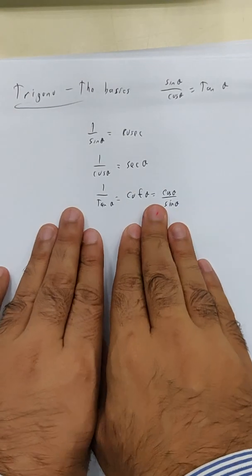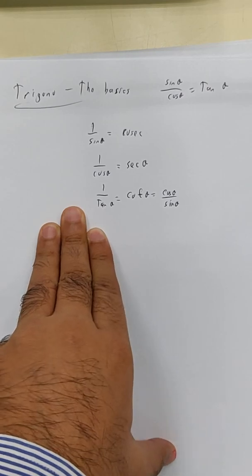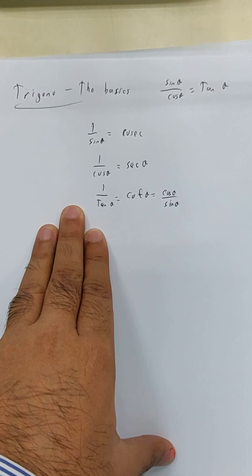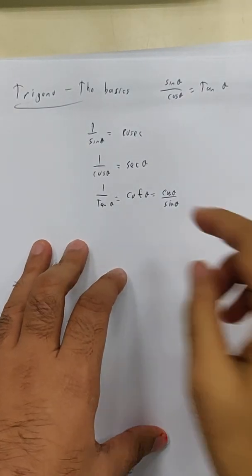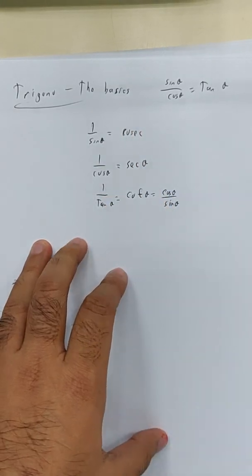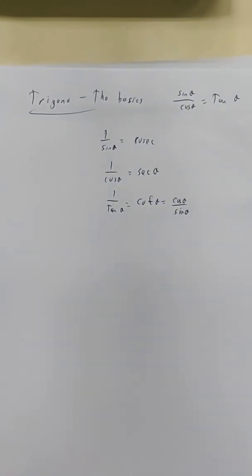Alright, just show of hands. Do you know how to memorize this thing? Please raise your hand. Do you know how to memorize one over sine is cosec, one over cos is sec, one over tan is cot? Not many people in here. There is actually a short way of memorizing this.